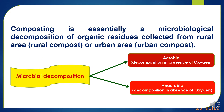Composting is essentially a microbial decomposition of organic residues collected from rural or urban sources. These microbial decompositions are of two types. First is aerobic, where decomposition takes place in the presence of oxygen, and second is anaerobic, where decomposition occurs in the absence of oxygen.